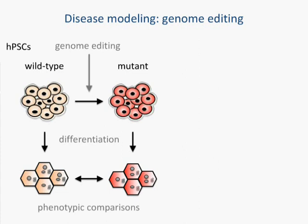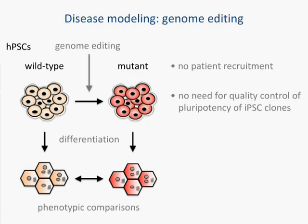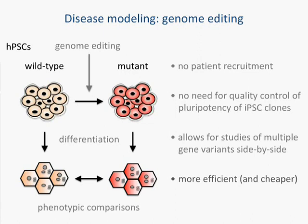We believe that this strategy has several advantages. There's no need for patient recruitment. There's no need to quality control the pluripotency of the IPS cell clones, because you're starting with well-validated pluripotent stem cells. It allows for studies of multiple gene variants side-by-side, something you could never do in a naturally occurring cell taken from someone. You might be able to look at disease-causing as well as disease-preventing mutations all on one genetic context, and it's actually much more efficient and cheaper to use genome editing to create your disease model.